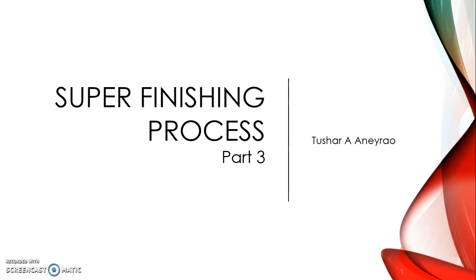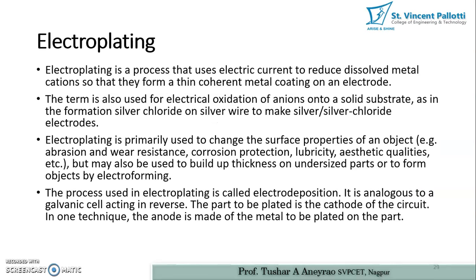First of all, we are going to see what is the meaning of electroplating. As you all know, in electroplating there is one cathode, one anode, and a certain solvent used in order to deposit the anode with the cathode material. Electroplating is the process that uses electric current to reduce dissolved metal cations so that they form a thin coherent metal coating on an electrode.